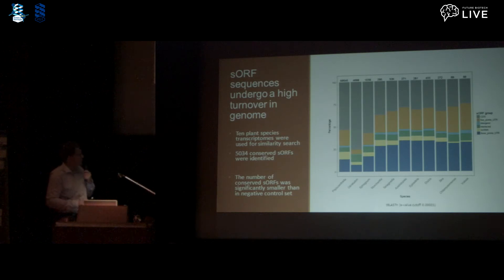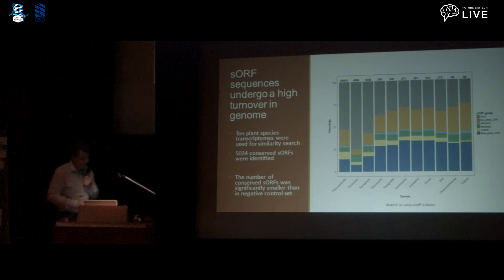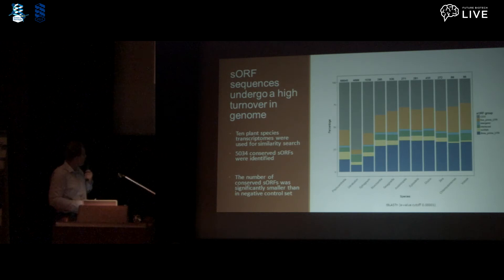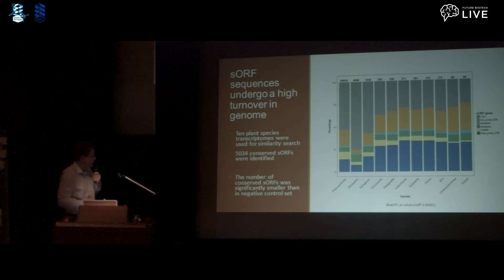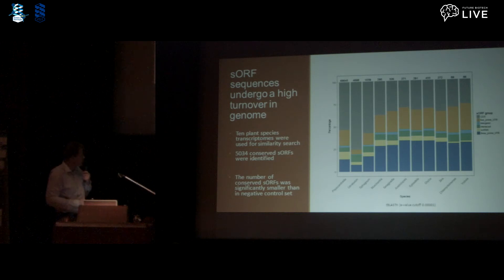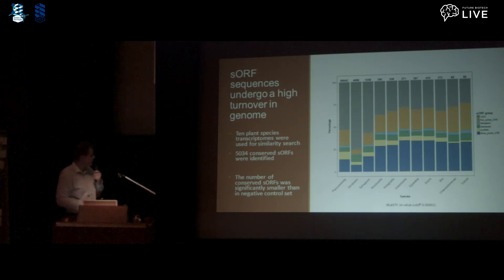Evolutionary conservation is a strong indicator of functionality. We chose 10 plant species to find conserved sORFs. Using this approach, we identified about 5,000 conserved sORFs. The number of conserved sORFs was significantly smaller than in a negative control set consisting of randomly generated exonic fragments. Interestingly, we observed a depletion of upstream and downstream sORFs in closely related species, whereas in more distant species, a depletion of CDS sORFs occurred.